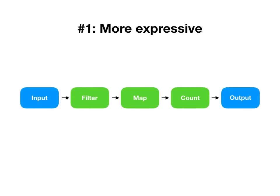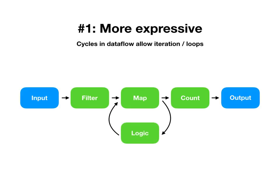Traditional dataflow systems allow you to write directed acyclic graphs, but timely dataflow is totally comfortable allowing you to put cycles into your graph. So we put some logic wrapped around map — the map that lowercases a string isn't super exciting, so maybe you think instead of a map that removes the last character from a string.